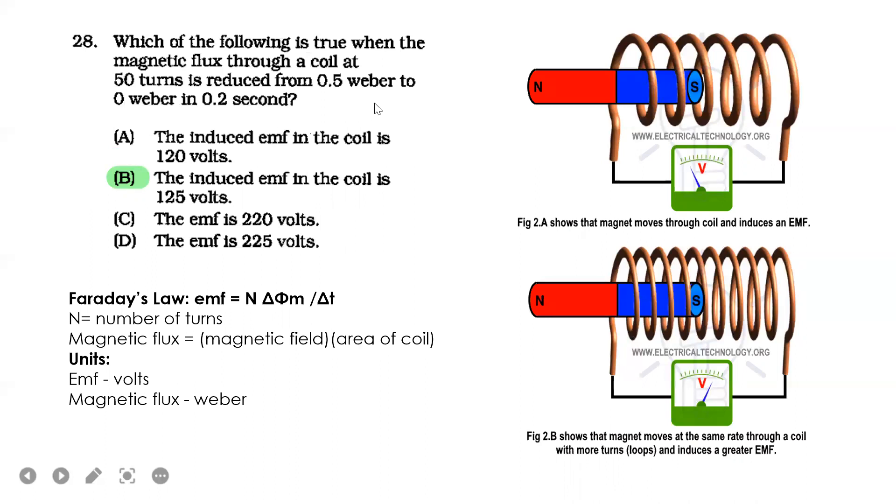Next. Which of the following is true when the magnetic flux through a coil at 50 turns is reduced from 0.5 weber to 0 weber in 0.2 seconds? I already solved for EMF—electromotive force. The answer is EMF, so solve which is the correct answer.